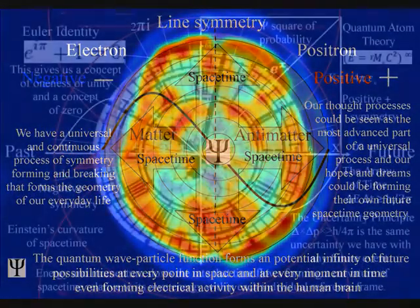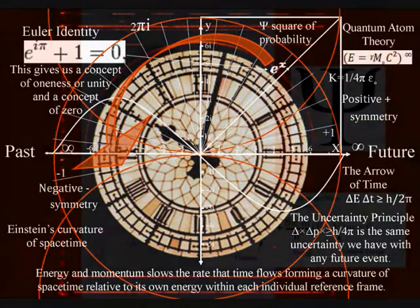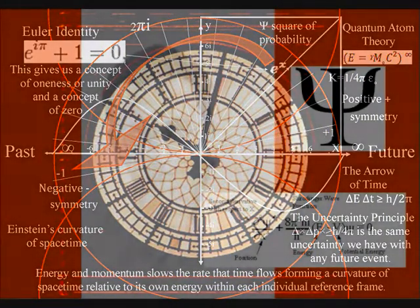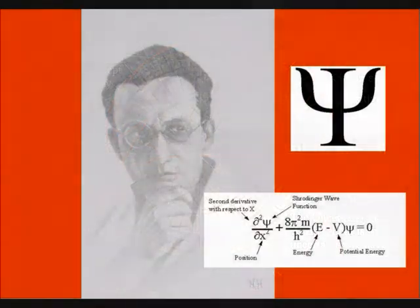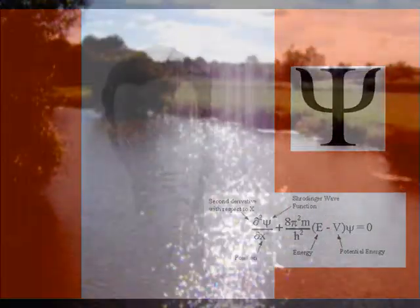This is based on two postulates. The first is that the quantum wave particle function, or probability function, represents the forward passage of time itself, with the future unfolding photon by photon.